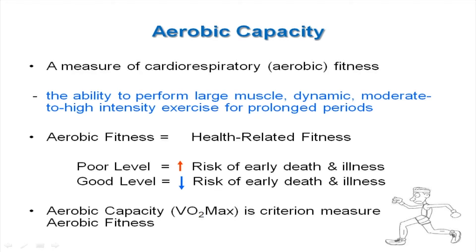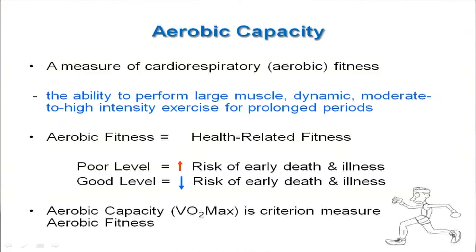A good level of aerobic fitness is strongly related to health-related fitness. A poor level of aerobic fitness shows an increased risk of early death and particularly chronic illness, whereas a good level shows a reduced risk of early death and chronic illness. Aerobic capacity or VO2 max is the criterion measure for aerobic fitness.